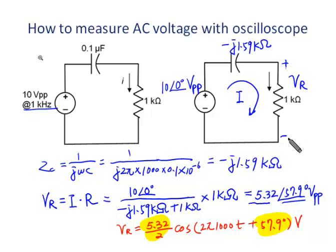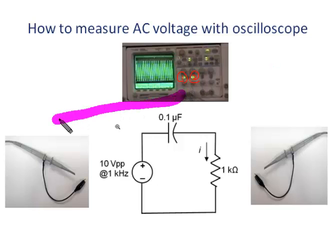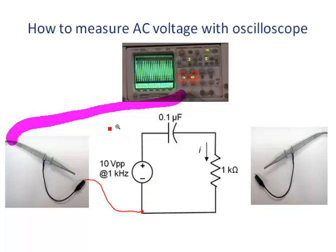For an oscilloscope with more than two channels, generally we can connect one of the channels to the power supply. Here we connect the first channel across the power supply. Notice the ground lead of the probe should be connected to the negative terminal of the power supply, so the ground lead is connected here. The other lead is connected at this point, so channel 1 is across the power supply.